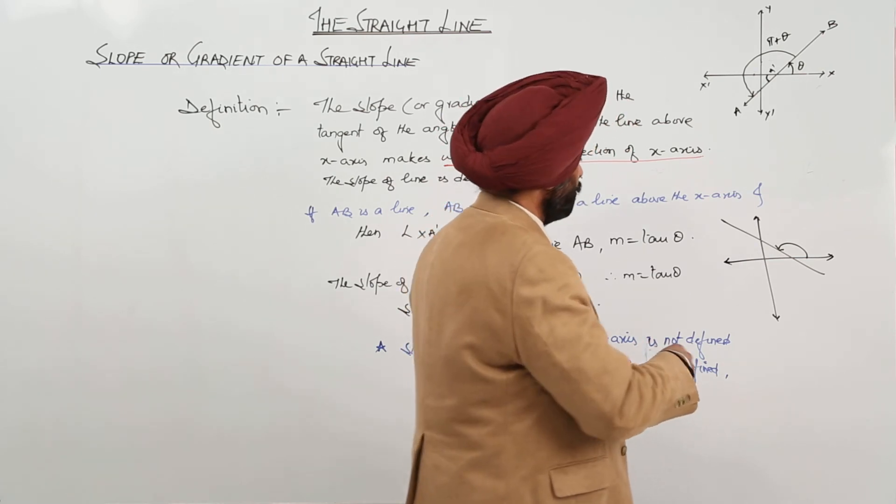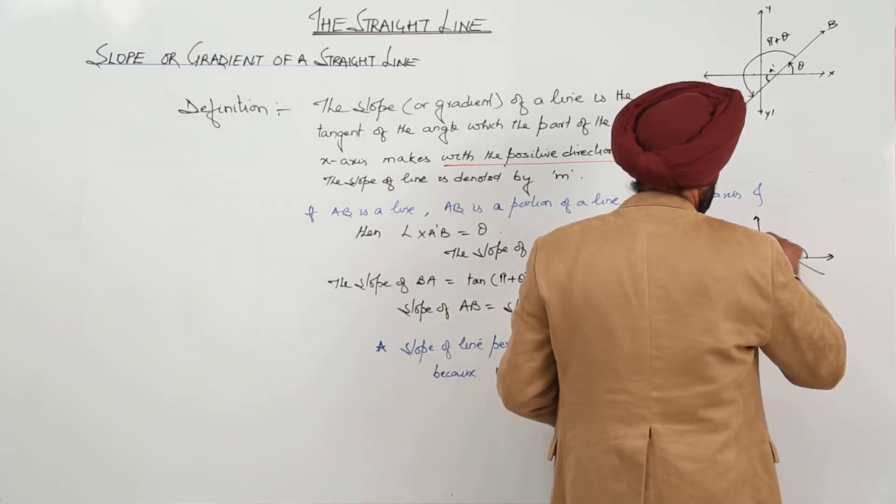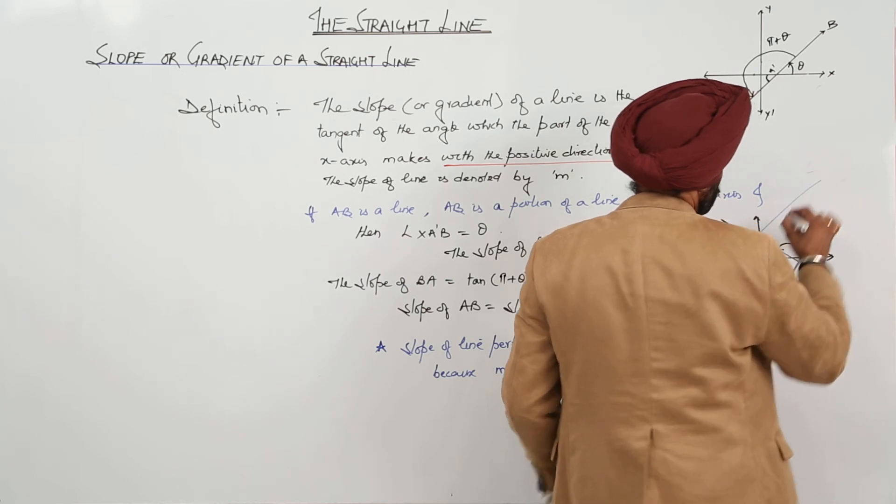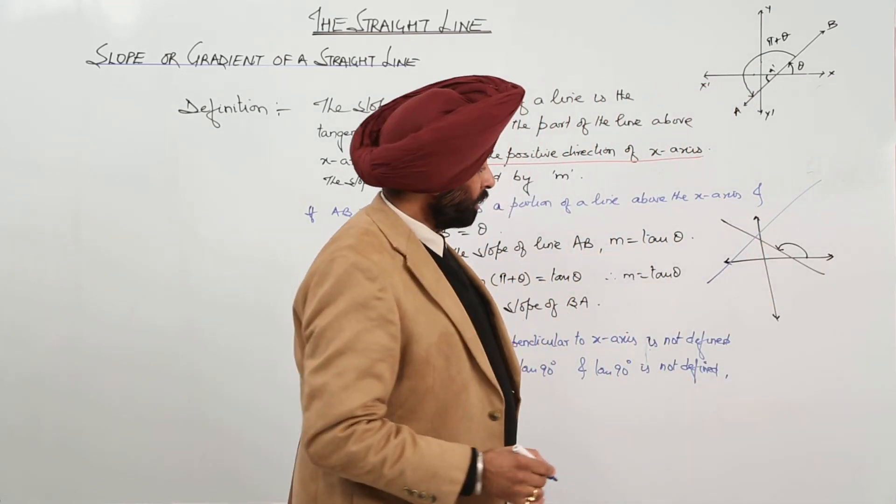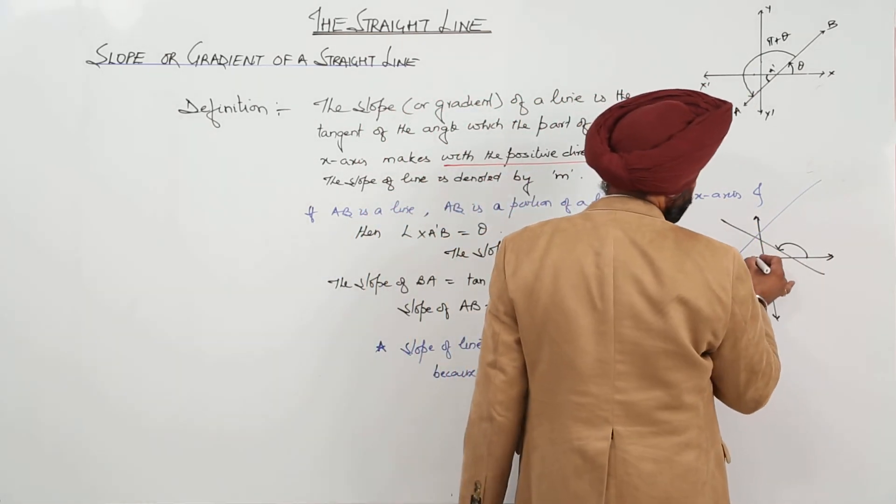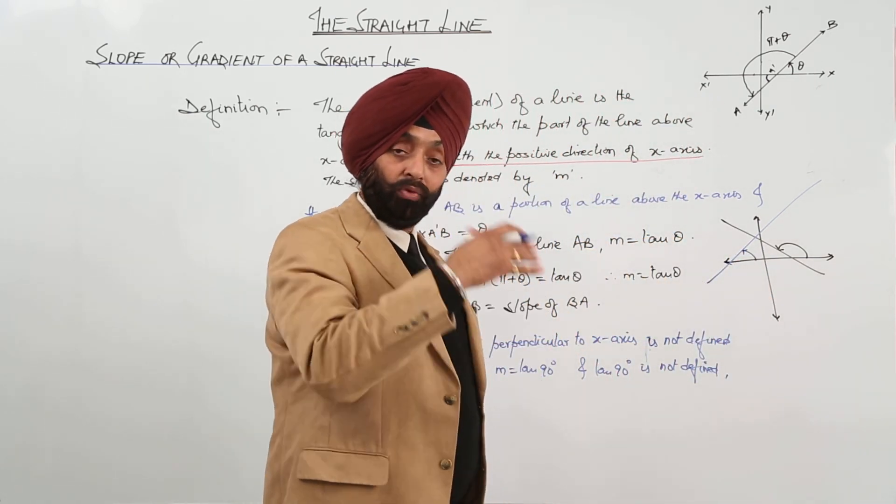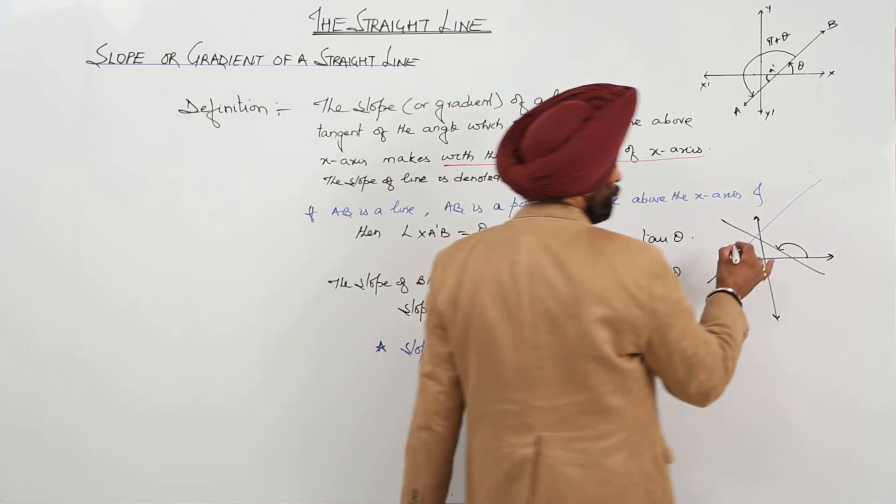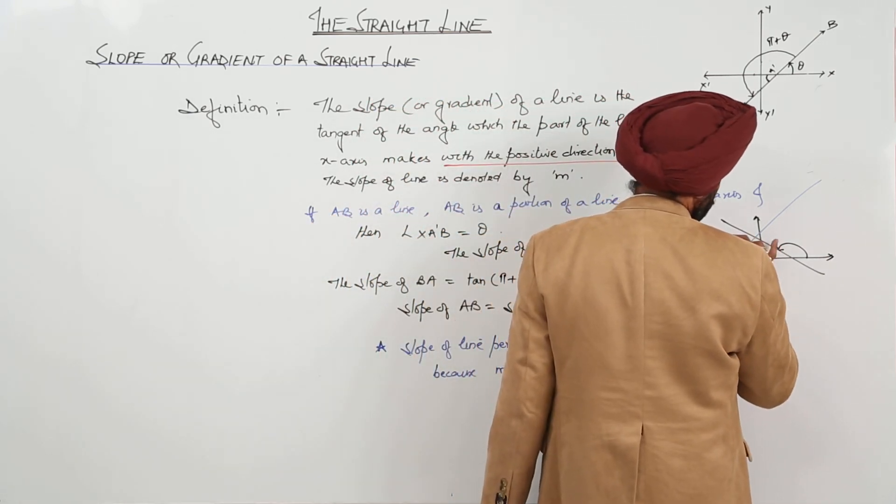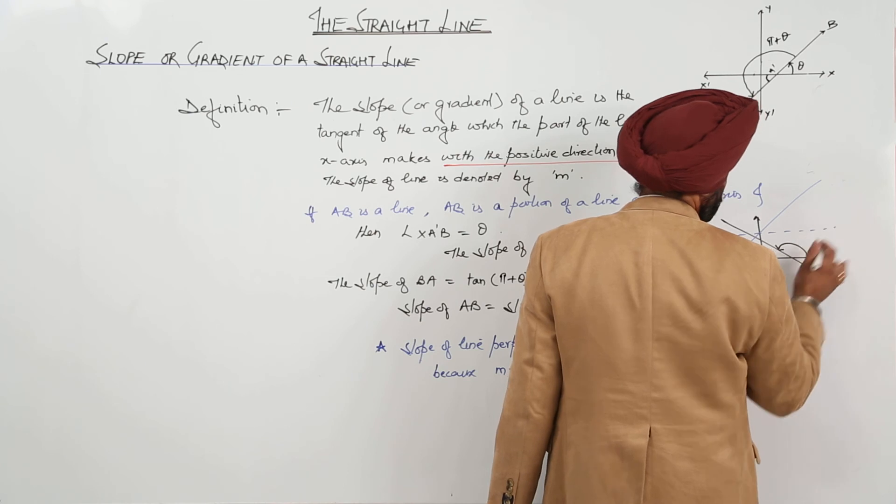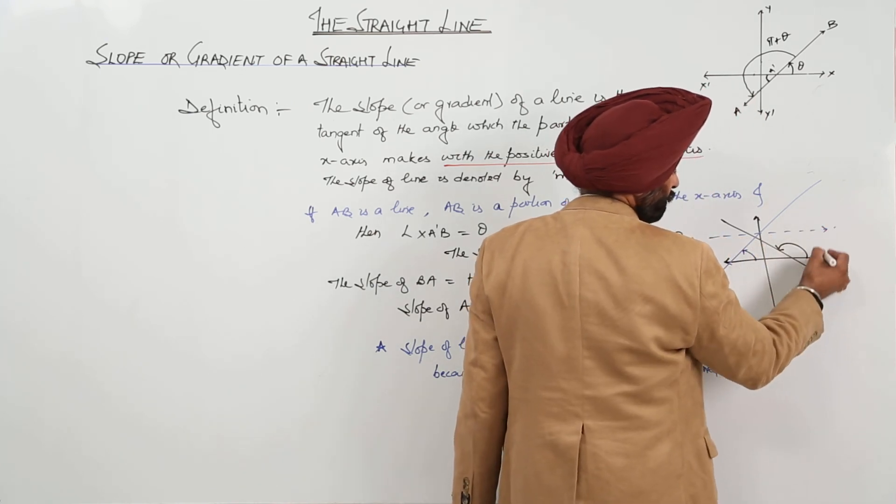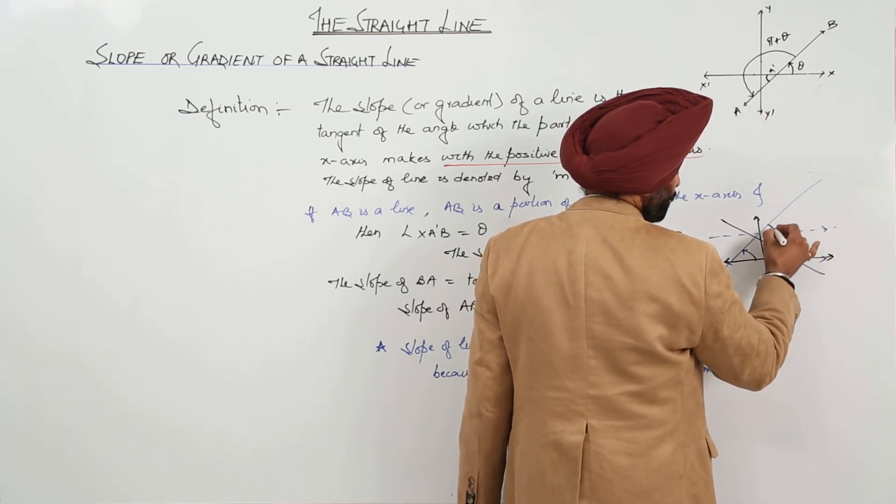Another line, suppose we are having this one. So, its slope will be which one? This one. You can move to this side. Slope will be this one. Or, if you want to be in the positive side only, you can just draw a straight line here. Now, this line is parallel to this line. So, it means this angle is the slope.